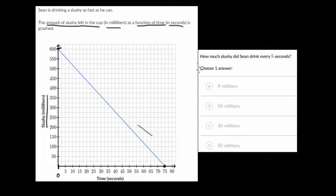Now we can answer this question. How much slushy did Sean drink every five seconds? After the first five seconds, we can see how much slushy is left. And it looks to be about right here, which is not the cleanest value.